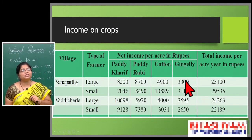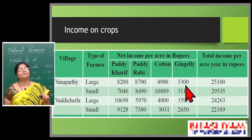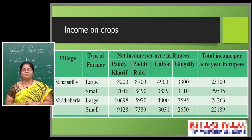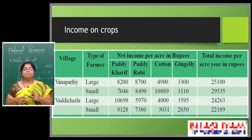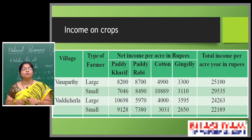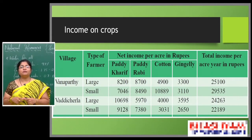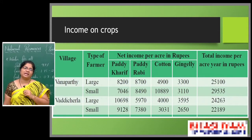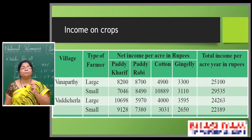The Vanaparthi small farmer got more income because of cotton and gingelly crops. If the farmer grows only one kind of crop over several seasons, they are unable to get more benefit. That's why farmers should change over their crops, especially towards dry farming crops, because the water percentage is very low and groundwater levels are decreasing day by day. Farmers need to select crops which require less water for yield — then only it is beneficial and they can get proper profit.